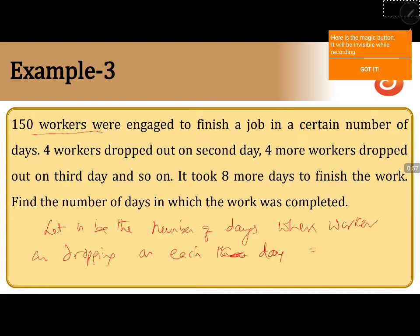For this 8 days more it took when workers are not dropping. Similarly, not dropping, number of days is n minus 8. Because original amount plus 8 is the number of days in which 150 workers dropping 4 workers on each day.